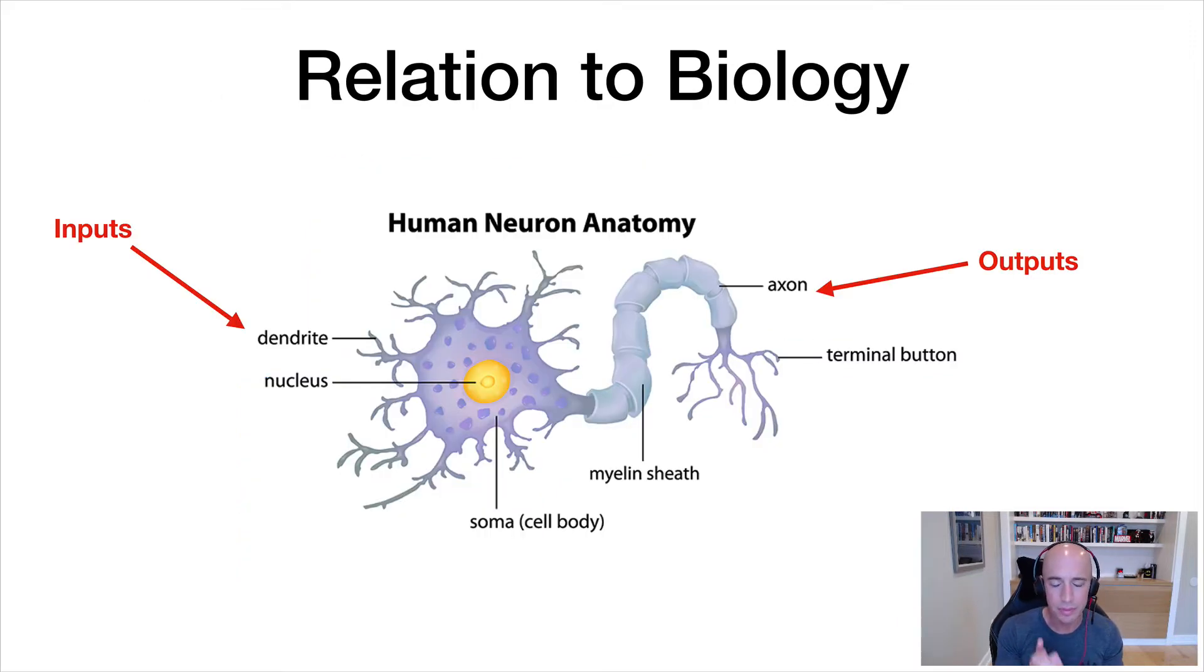That said, there is absolutely a relation to biology with neural networks. And here we have the neuron anatomy with the dendrite, the nucleus, the soma, the myelin sheath, and the axon. The dendrites are the inputs in a neural network in this analogy. These dendrites connect to other neurons, and then the axon is the output. So that axon is connecting to other dendrites.